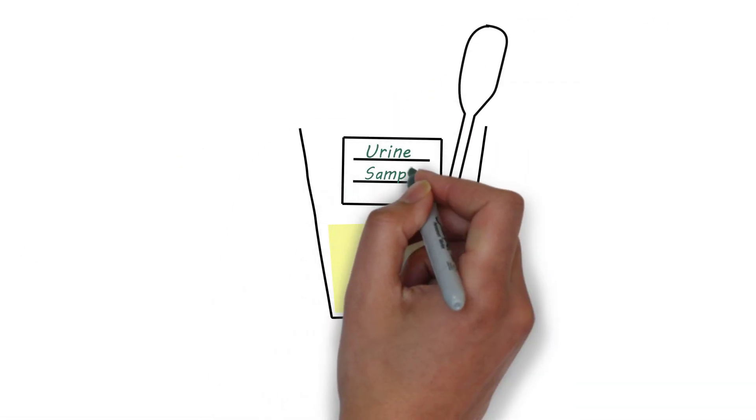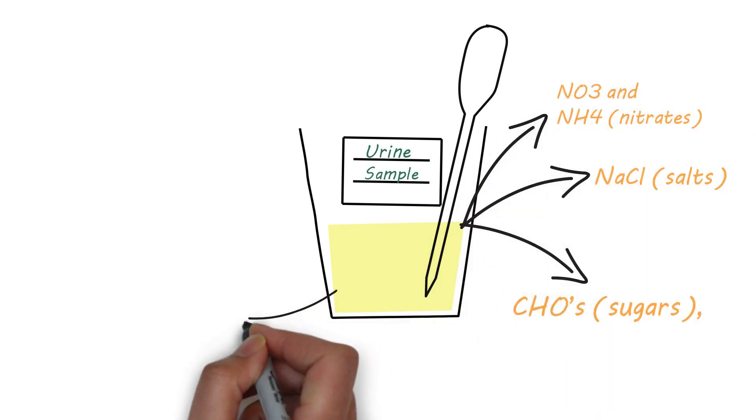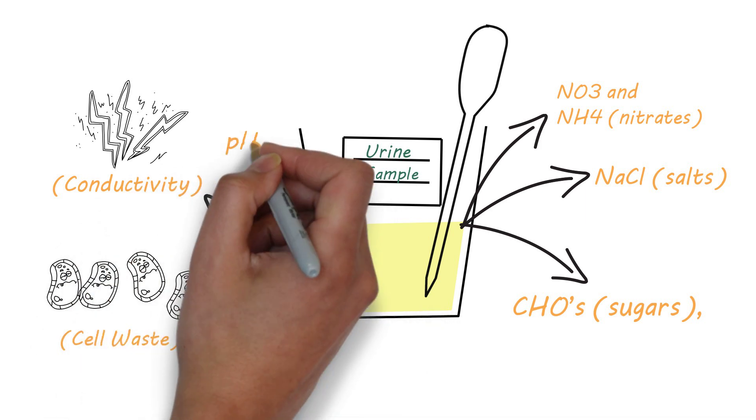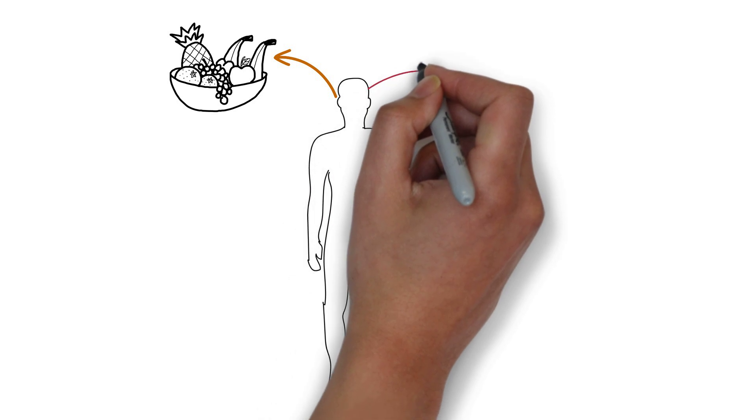We also do a urine and saliva analysis to observe sugars, salts, nitrates, and cellular waste, along with the electrical resistant measurements to know how efficient the body is in processing food and what nutrients are needed to improve efficiency.